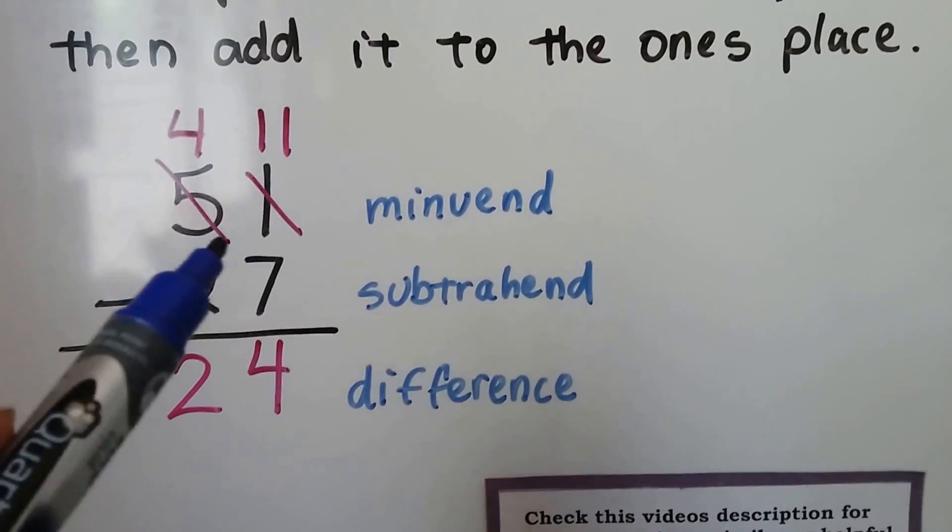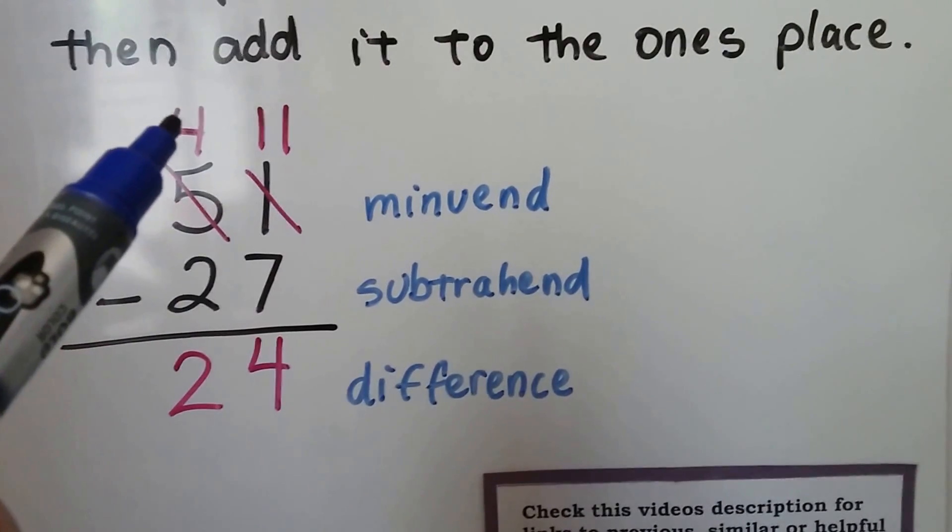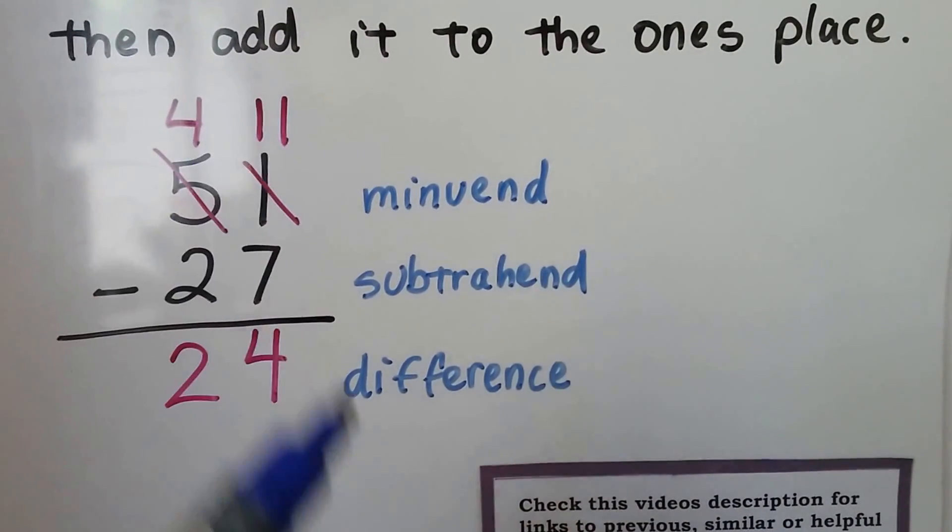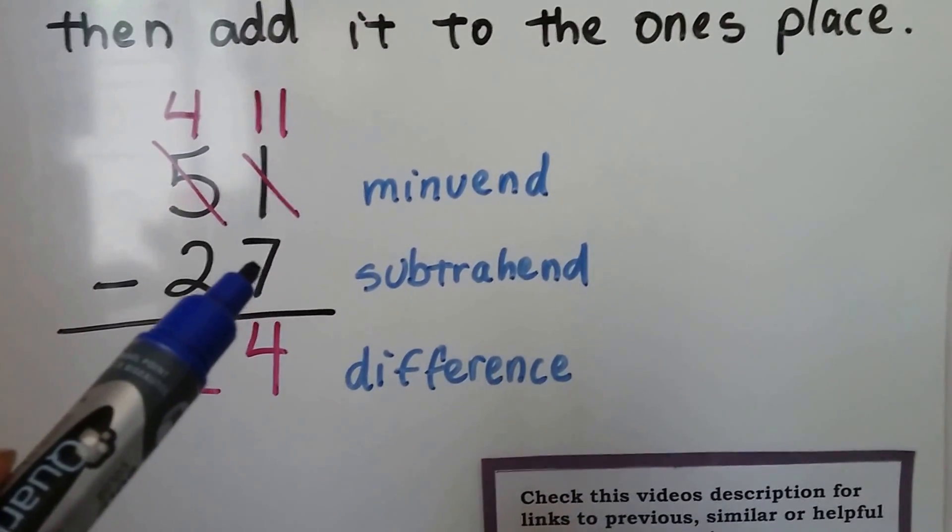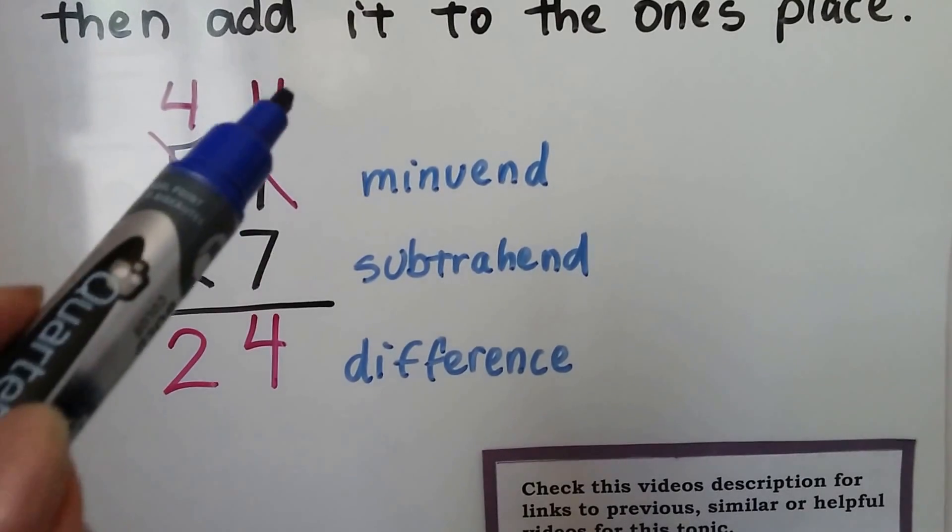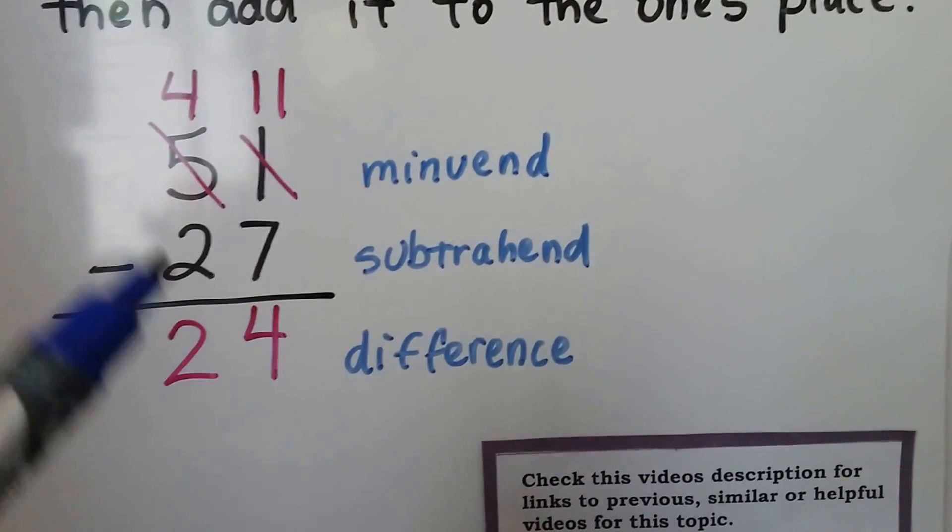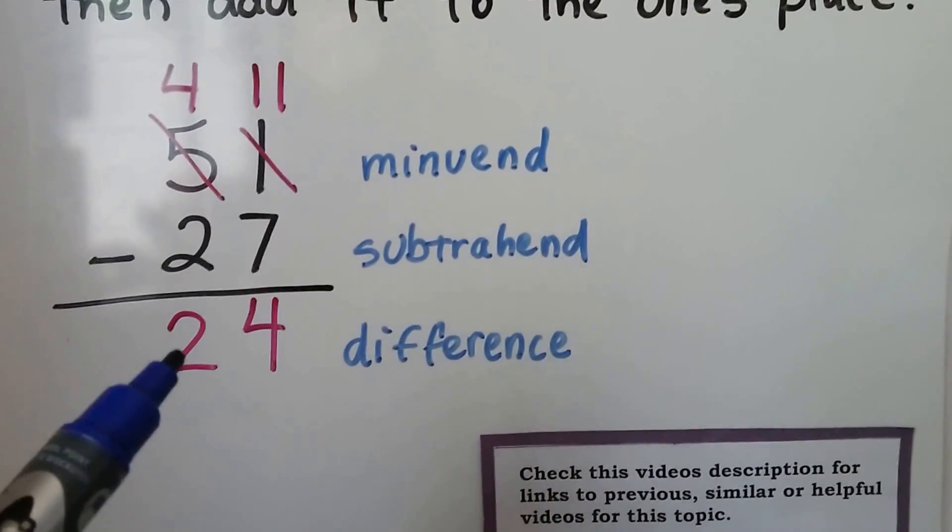So we take a 10 away from the 5, it becomes a 4, the 1 becomes an 11, and now we can take 7 from 11. 11 minus 7 is 4, 4 minus 2 is 2.